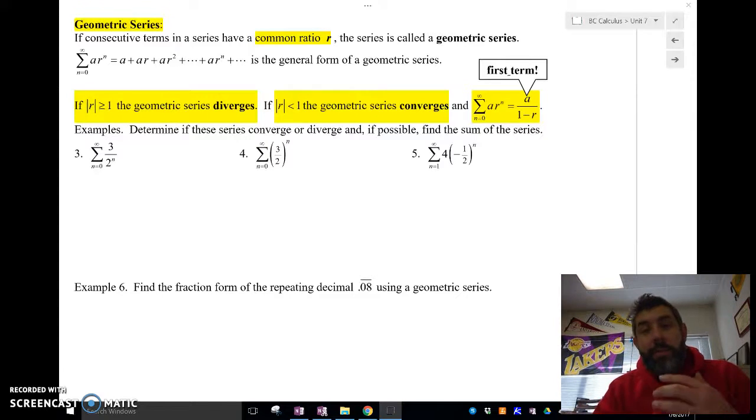In a geometric series, we have what's called a common ratio, and that's basically if we can multiply the same number to each term to get the next term, then it's a geometric series. So the general form of a geometric series is an exponential. So that common ratio r is going to be raised to a certain power.